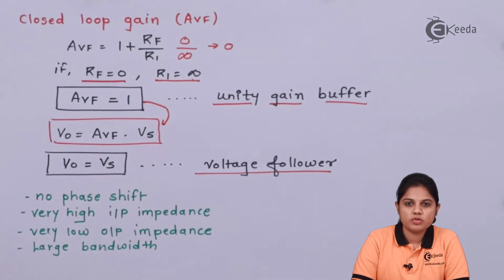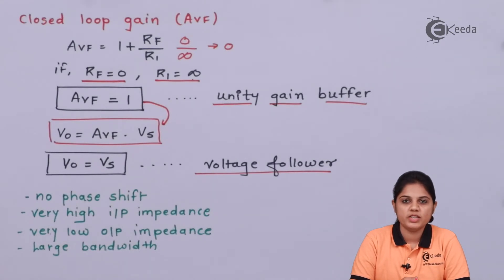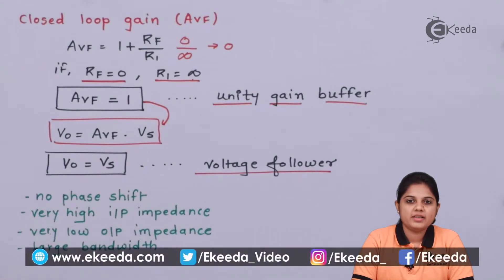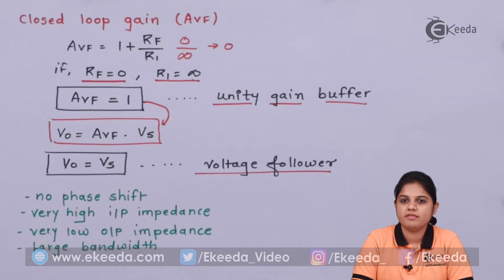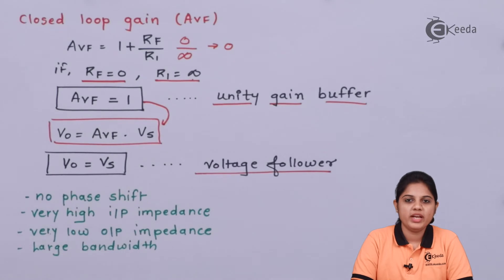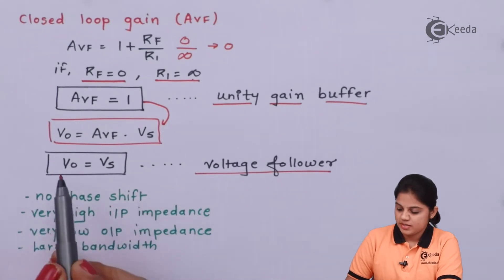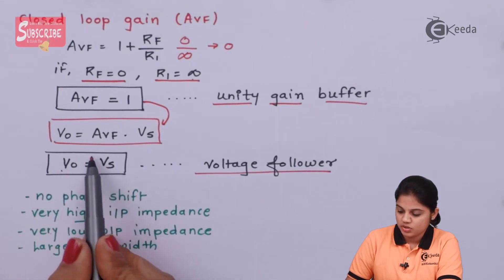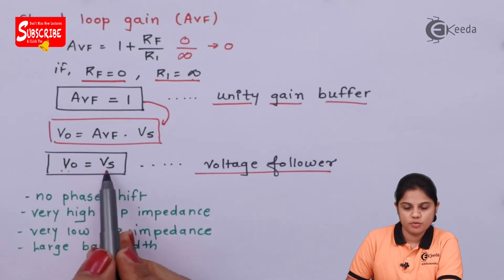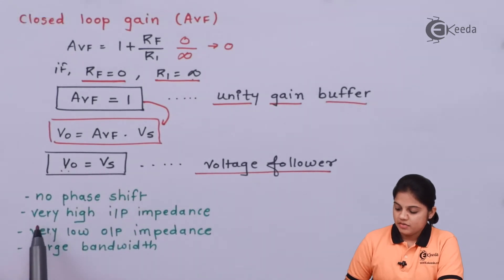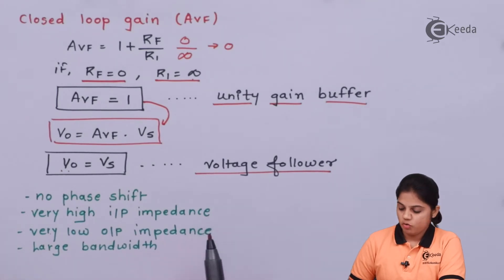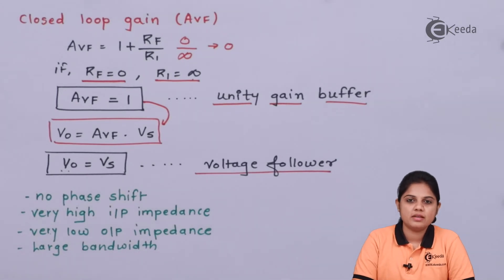By changing the value or position of the feedback resistance and input resistance, the non-inverting configuration becomes a voltage follower or unity gain buffer. The advantages of a unity gain buffer are: first, the gain equals 1 or unity, which is advantageous compared to an inverting amplifier. Second, it has no phase shift — V0 equals Vs with no sign change, so the output is exactly the same as the input. Third, it has very high input impedance, which is an ideal characteristic of an op-amp. Fourth, it has very low output impedance. Fifth, it has a large bandwidth, meaning signals over a large frequency range can be processed using a voltage follower.